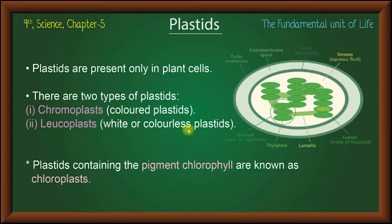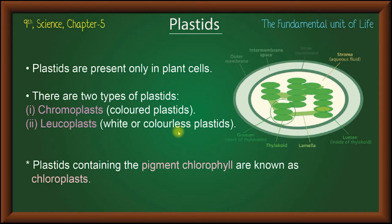Leucoplast is white and colorless. Chromoplast means colorful — it is colored plastic. Leucoplast means colorless. So chromoplast is colored and leucoplast is colorless.